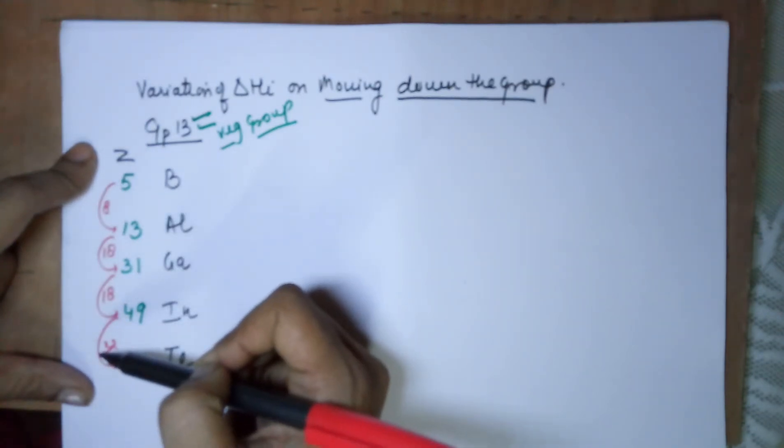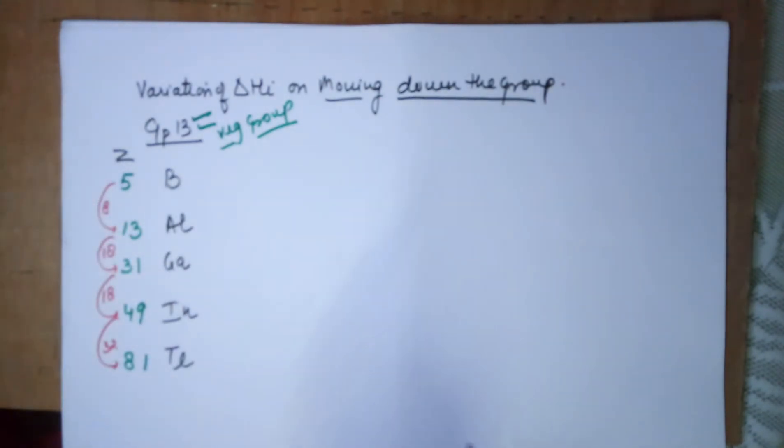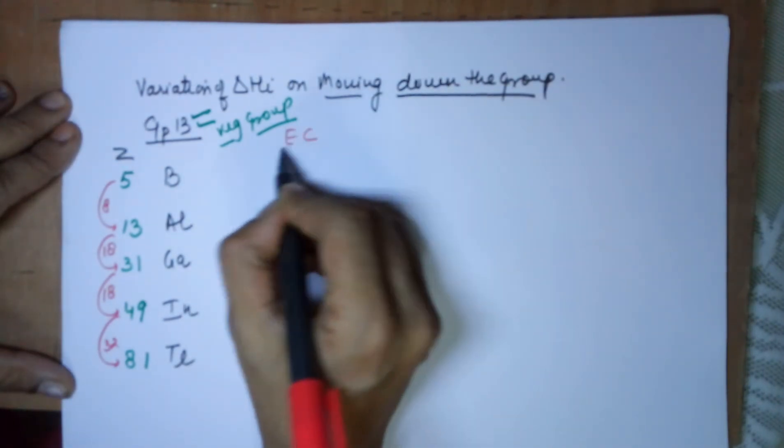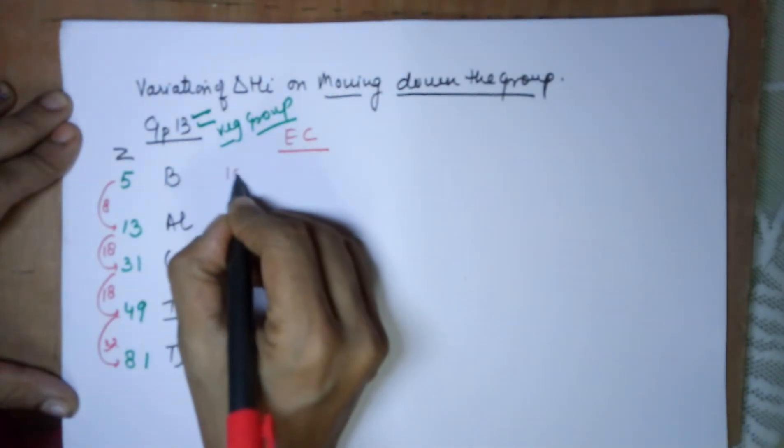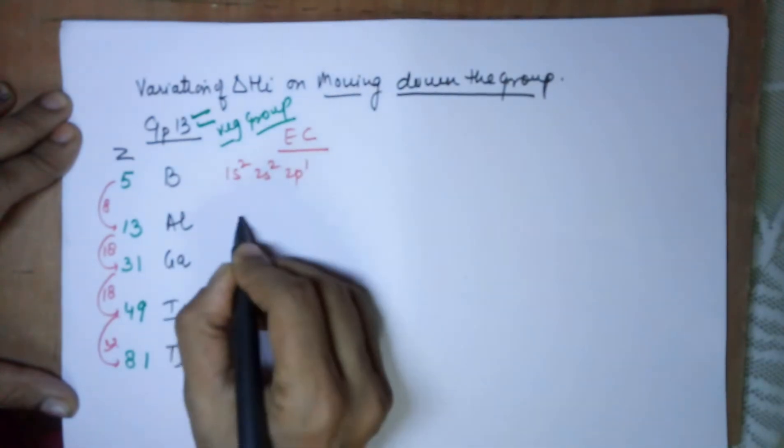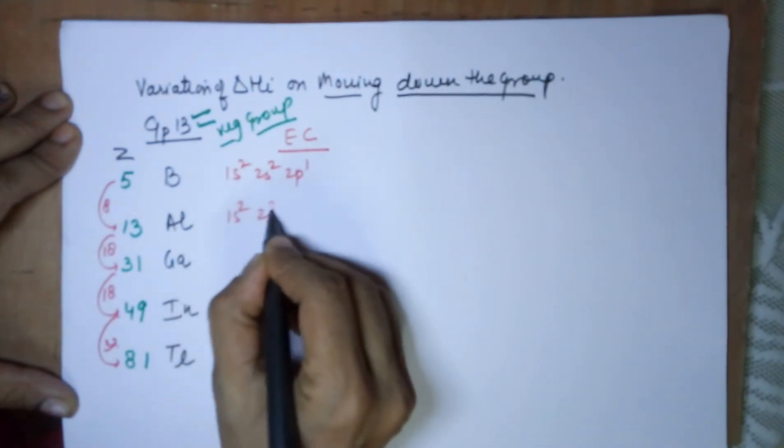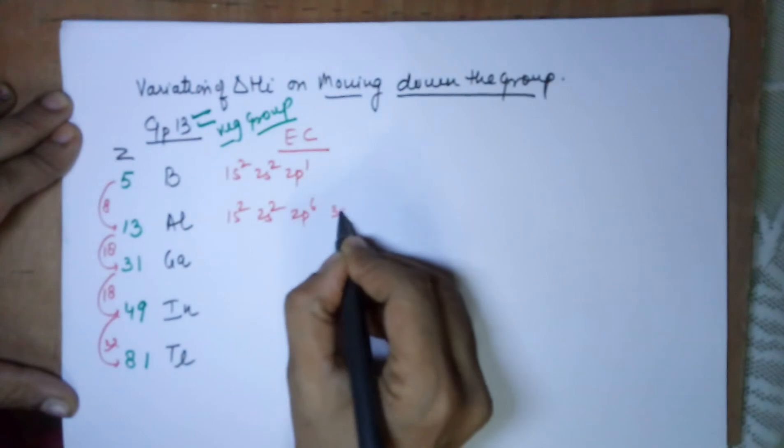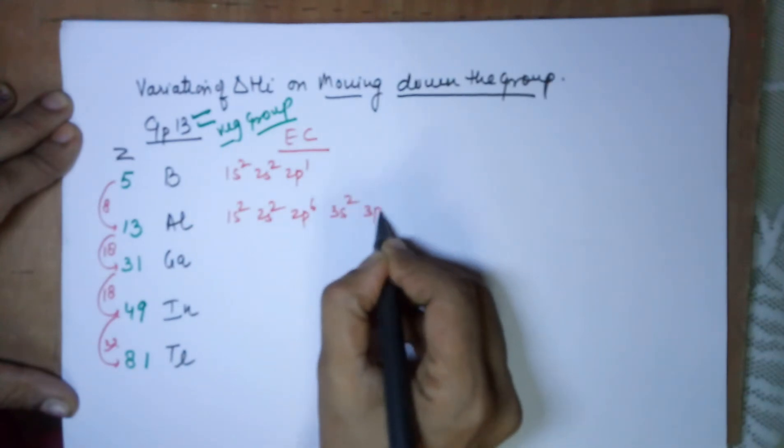Now moving to the electronic configuration on the basis of quantum model. Boron: 1s² 2s² 2p¹. Aluminum: 1s² 2s² 2p⁶ 3s² 3p¹.